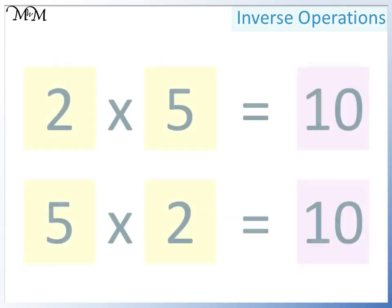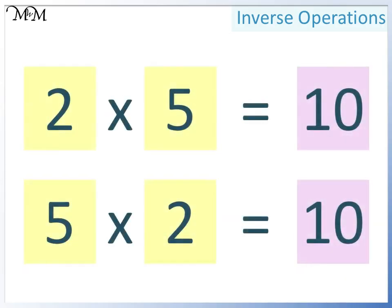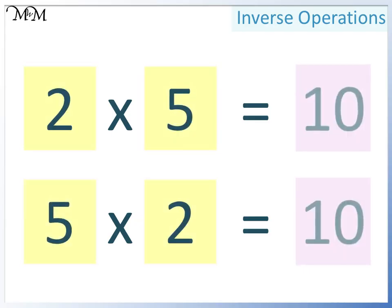The two multiplications that we have made are 2 times 5 equals 10 and 5 times 2 equals 10. In both calculations, two smaller numbers multiply together to make a larger number.